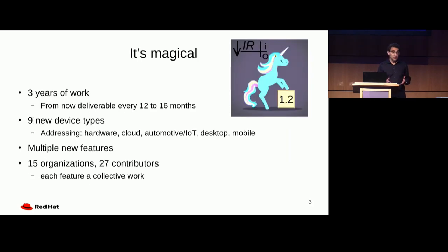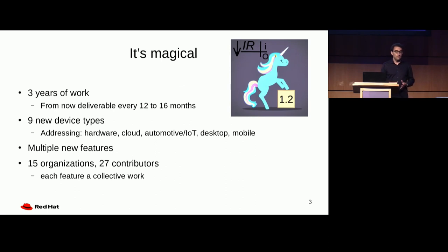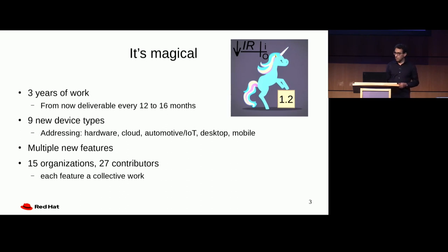It's three years of work. It took a bunch of time to prepare that release, but now we're committed to doing yearly releases. Hopefully this commitment will help us keep to the schedule. It's the biggest release of Virtio so far — nine new device types, we almost doubled the number of supported devices. This is because we are trying to address new challenges and new use cases: not just cloud, not just pass-through from hardware features, but also automotive, internet of things, desktop, and mobile. Lots of organizations participated, and most features involved collaboration from multiple companies.